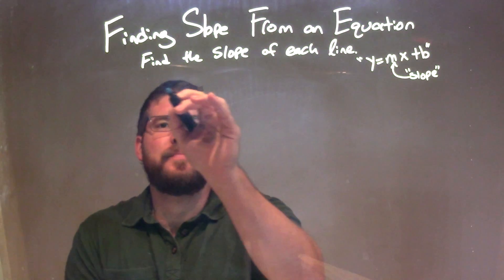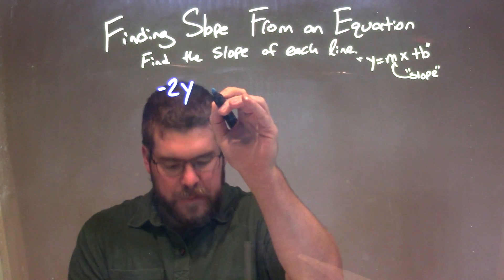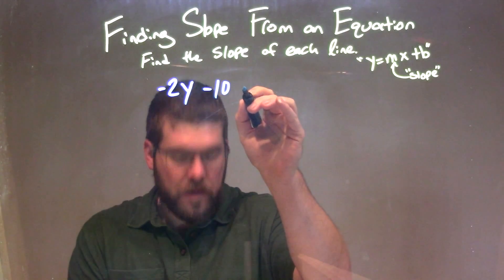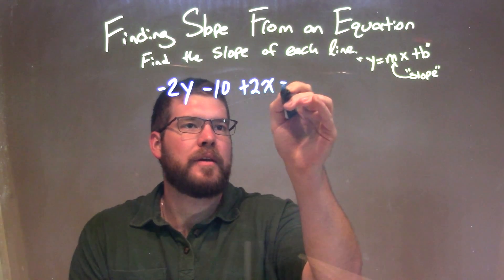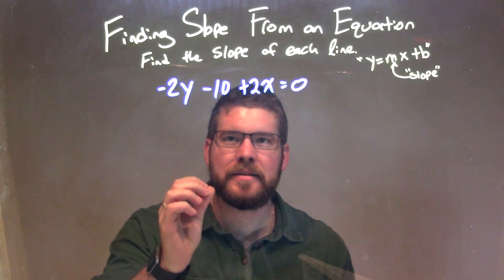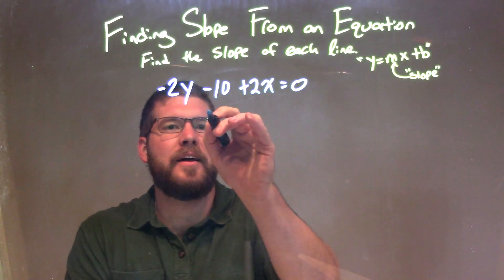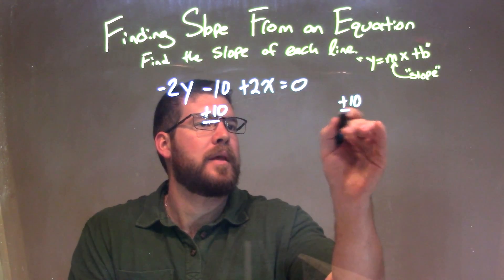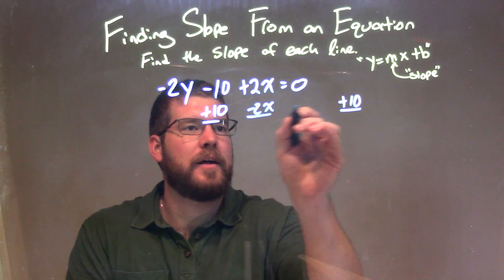So if I was given this equation: negative 2y minus 10 plus 2x equals 0. Well, I need to isolate my y, I need to get y by itself. So to do that, I'm going to add 10 to both sides and I'm going to subtract 2x from both sides.